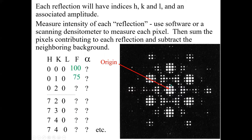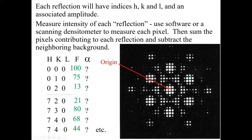We can continue: the 0, 3, 0; the 0, 4, 0; the 0, 1, 1; the 0, 1, 2; the 0, 1, 3. Where's the 7, 2, 0? We go seven in X and up two — that's this spot right here, intensity 21. The 7, 3, 0 is about 80, another nearby spot is 68, and another is about 44. We can go through with software or a scanning densitometer to assign H, K, L indices and measure the intensities of all of these. But again, we don't know the phases for these.